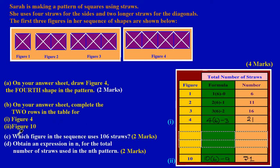In Part C they are asking us which figure in the sequence uses 106 straws — that's an easy two marks. In Part D they are asking us to obtain an expression in N for the total number of straws used in the nth pattern. What they mean by the nth pattern is they are asking us to find a formula that, no matter what pattern they are dealing with, you can use to find how many straws would make up that pattern.